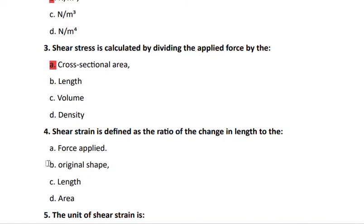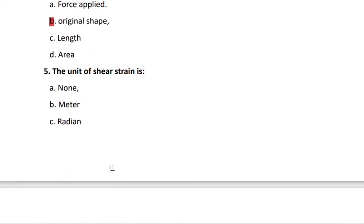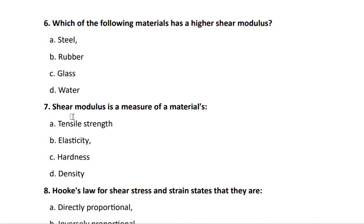Question 5: the unit of shear strain is none — strain has no unit, so the answer is none of the given options (not meters, not radians). Question 6: which of the following materials has the highest shear modulus? The answer is steel — steel is less likely to shear compared to other materials.